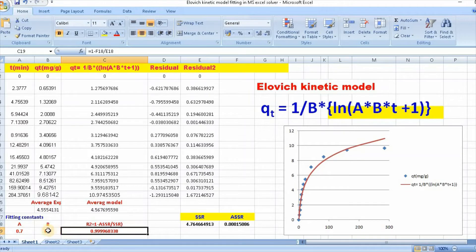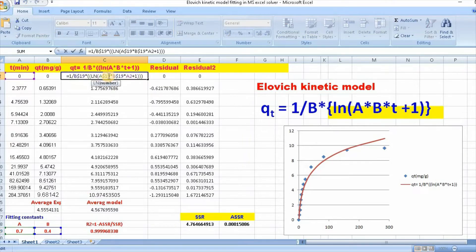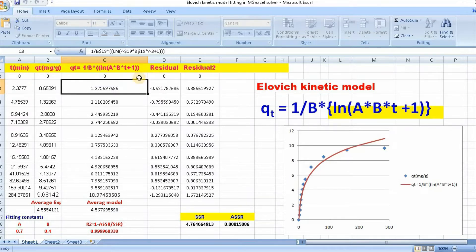You can change this value to make it maximum close fit. You need to write function here: 1 by b into ln a into b into t plus 1. I have added dollar sign to b, a and b because these two values are constant. You need to add dollar sign like this, then enter and scroll down.